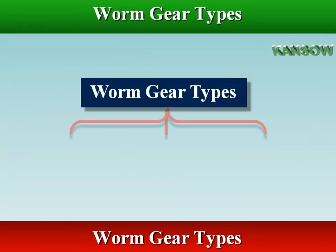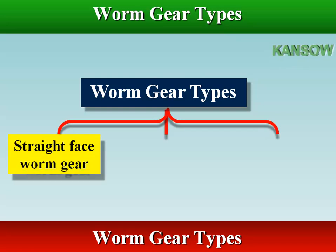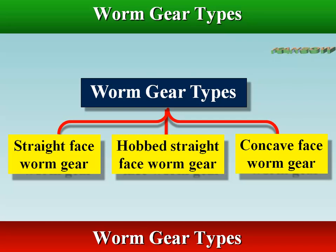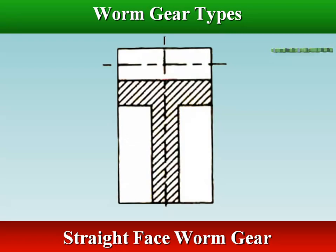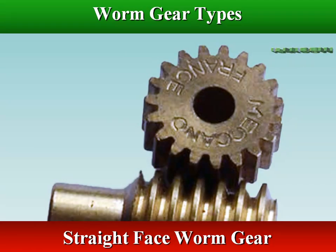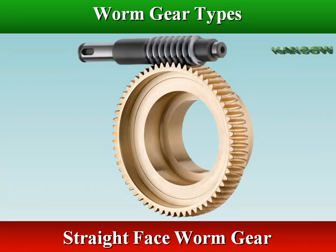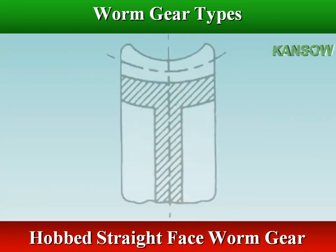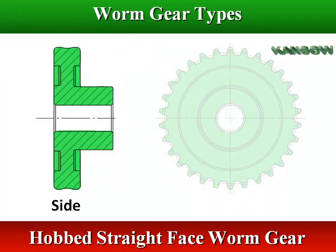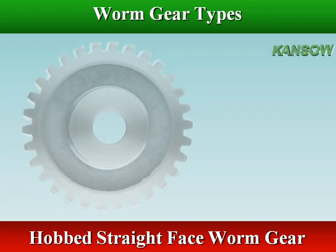The three important types of worm gears are: straight-face worm gear, hobbed straight-face worm gear, and concave-face worm gear. The straight-face worm gear is like a helical gear in which the straight teeth are cut with a form cutter; since it has only point contact with the worm thread, it is used for light service. The hobbed straight-face worm gear is also used for light service, but its teeth are cut with a hob, after which the outer surface is turned.